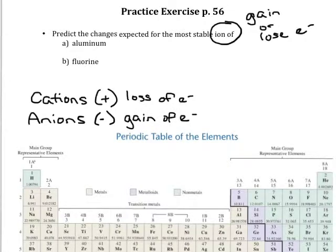Now typically, we can use the periodic table to predict if something is going to be a cation or an anion. Typically, metals will lose electrons to form cations and nonmetals will typically gain electrons to form anions.